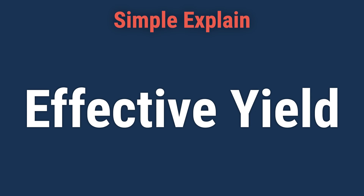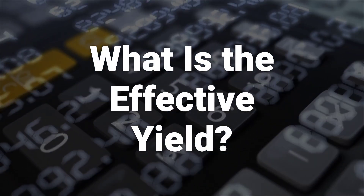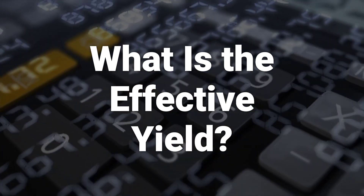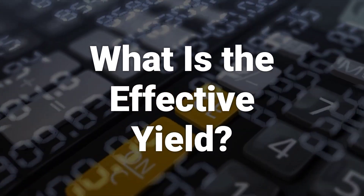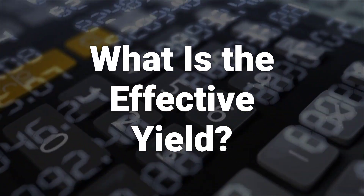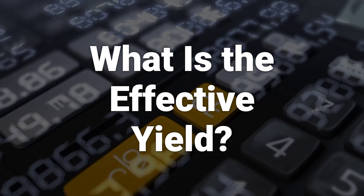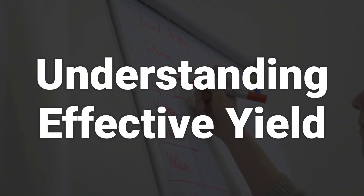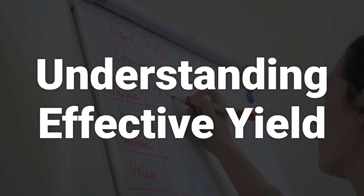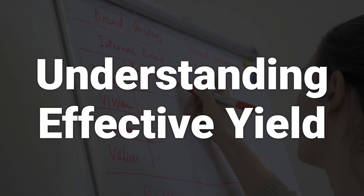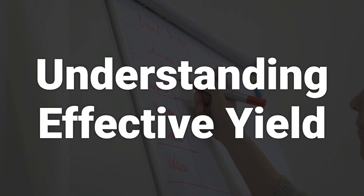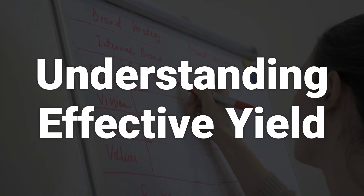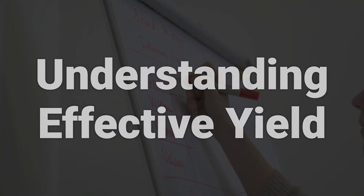Today, we will talk about the effective yield. The effective yield is the return on a bond that has its interest payments reinvested at the same rate by the bondholder. It's the total yield an investor receives, taking into account the power of compounding on investment returns. Effective yield is a measure of the coupon rate on a bond and is calculated by dividing the coupon payments by the current market value of the bond. It's one way that bondholders can measure their yields on bonds and takes into account the reinvestment of coupon payments at the same interest rate.